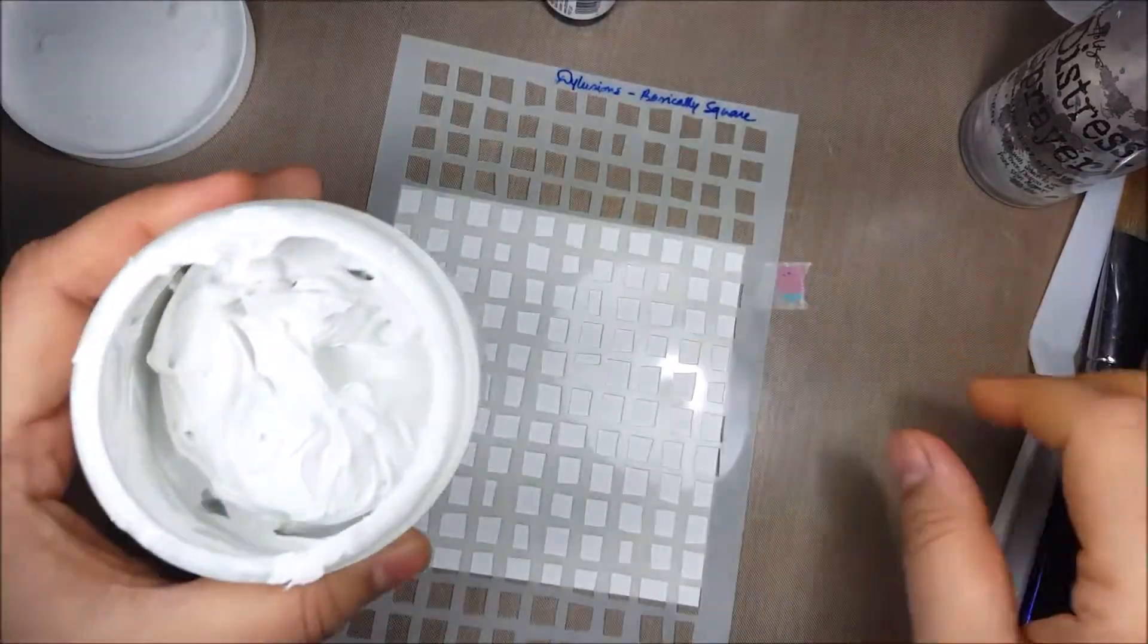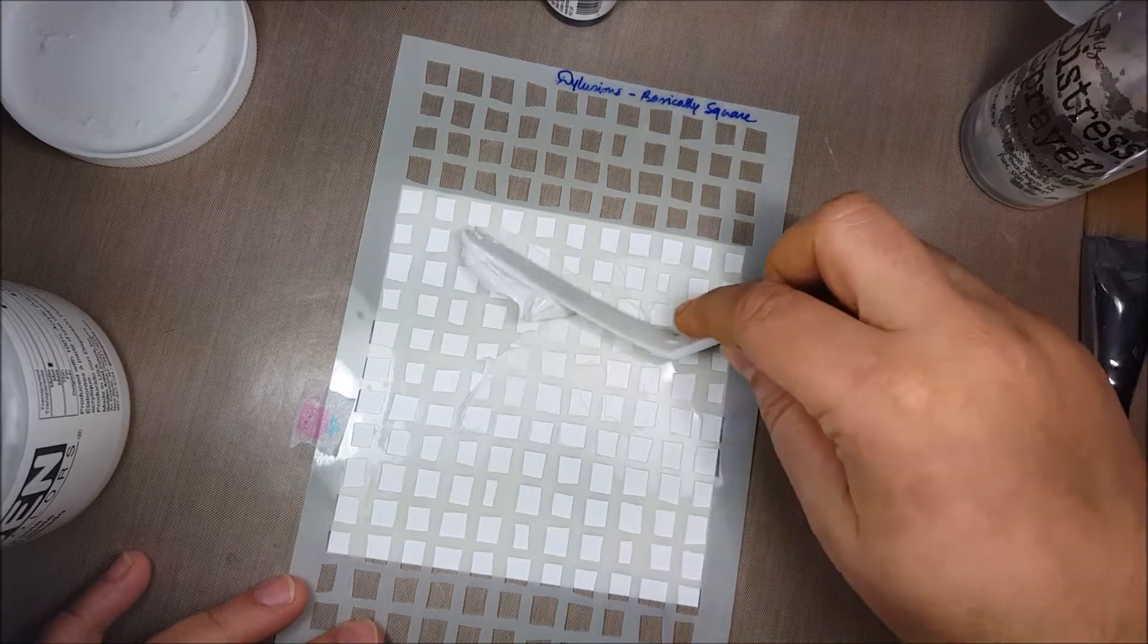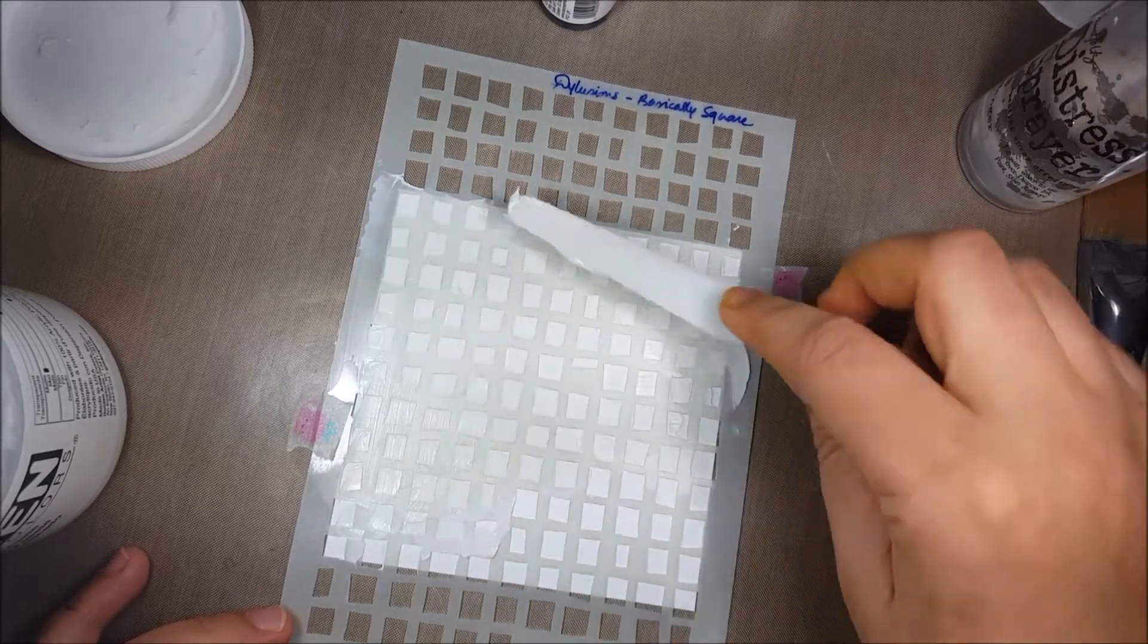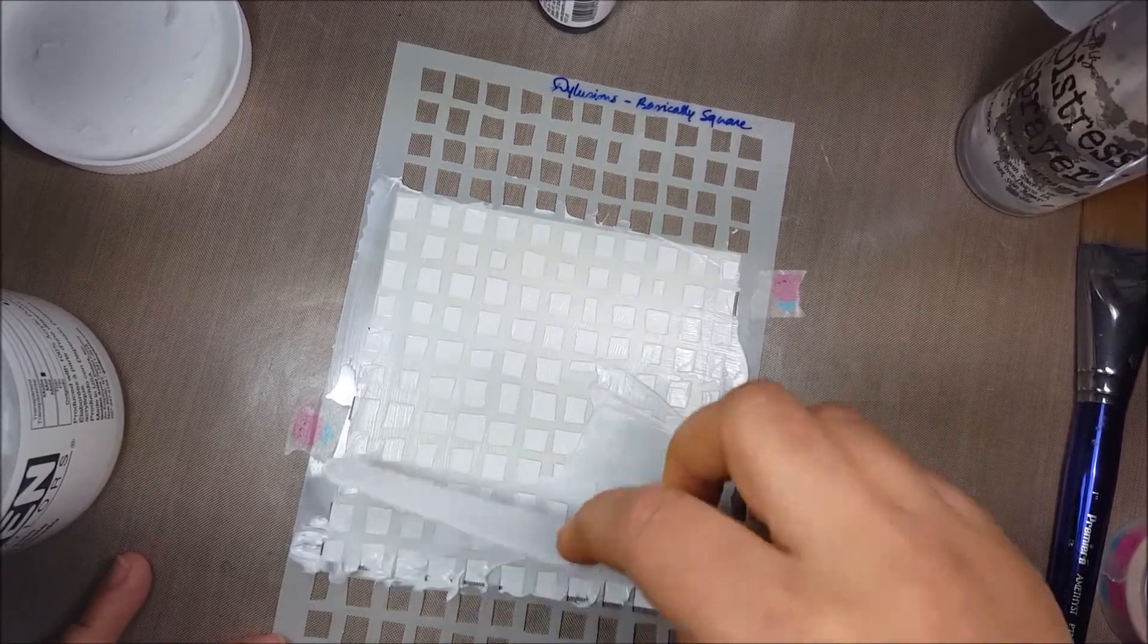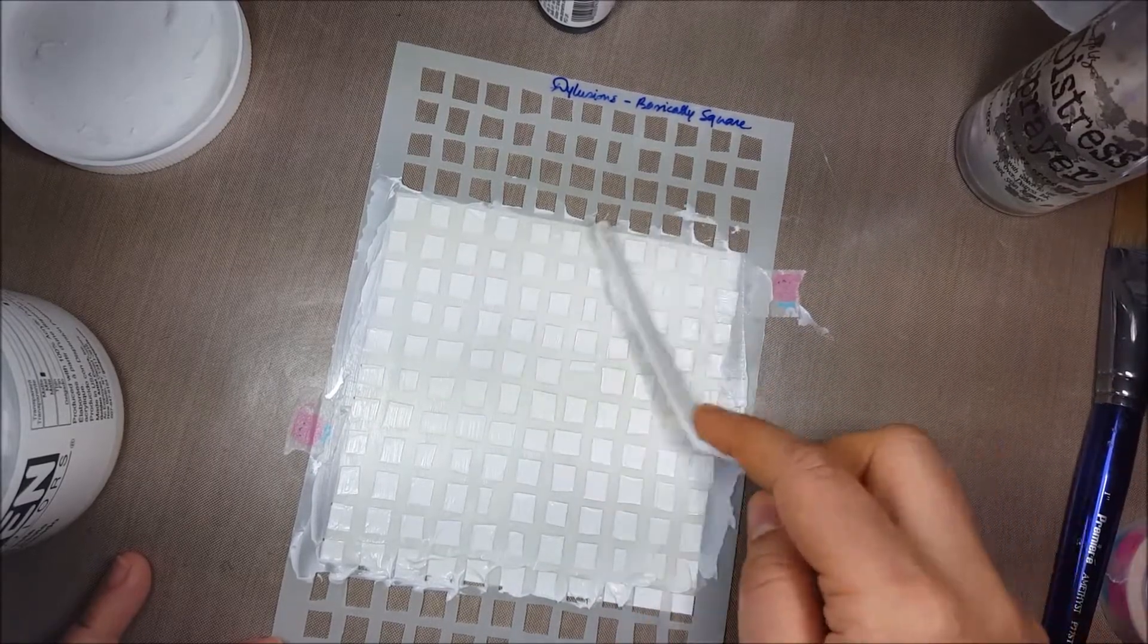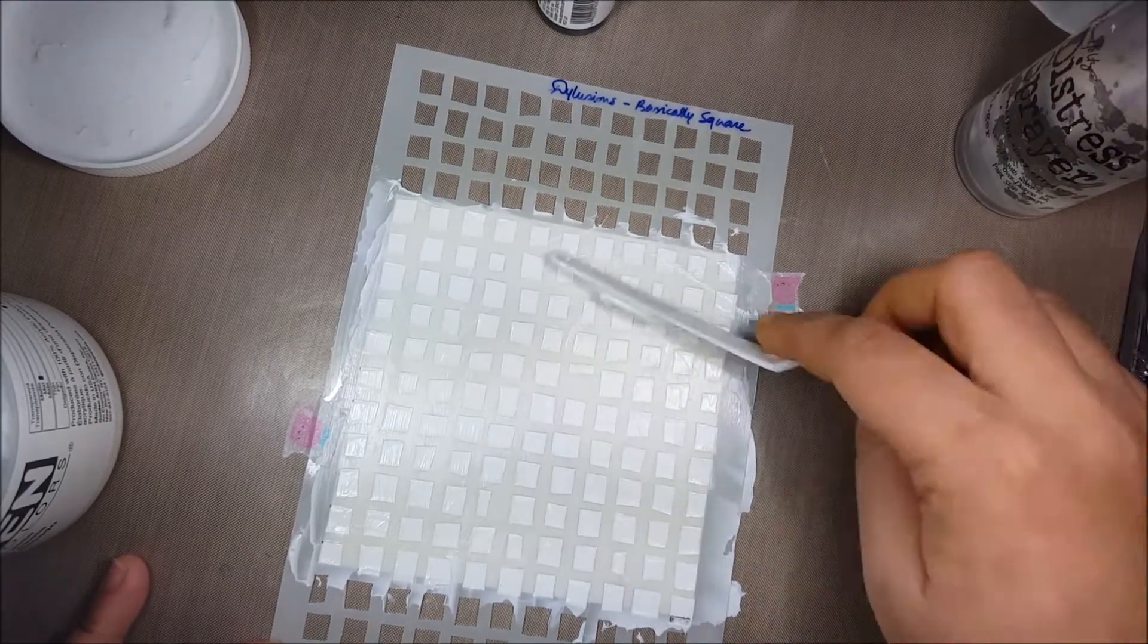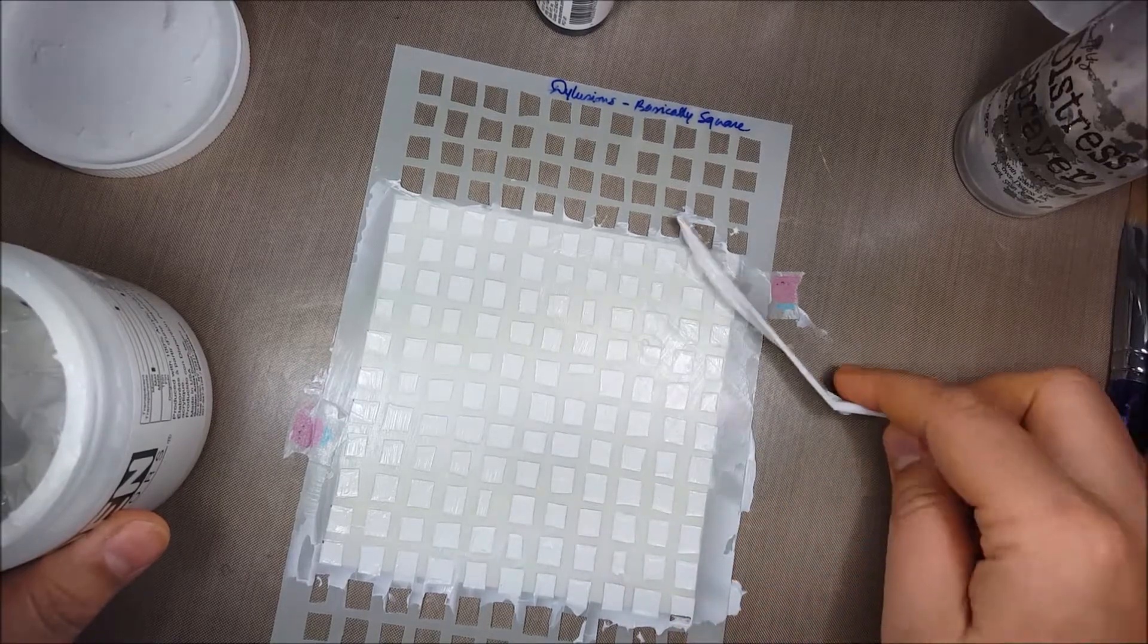Now let's begin with the stenciling. Here's how the modeling paste looks like. I'm taking a small bit of it and start applying it on the entire cardstock front. I'm smoothing out the surface after I apply the modeling paste, and applying it on the remaining spots wherever I see there's a blank, then smoothing out again.